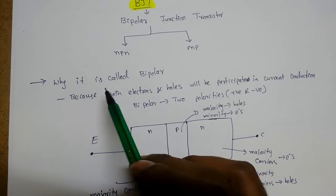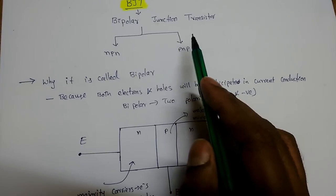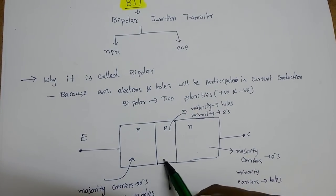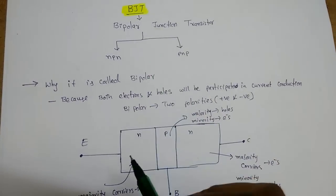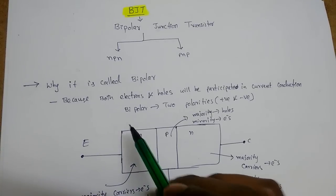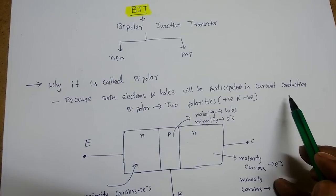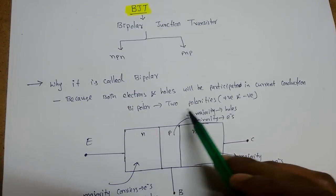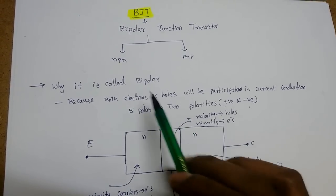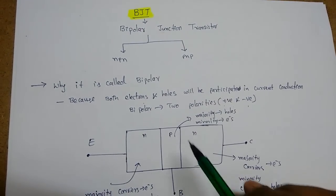Before starting, we have to discuss why it is called a bipolar junction transistor. When the term comes to mind, we might think it is because there are two junctions — emitter-base junction and collector-base junction. But that is not the correct reason. In a bipolar junction transistor, both electrons and holes participate in the current conduction. Bipolar means two polarities — both holes as well as electrons participate in current conduction. That is why it is called bipolar.